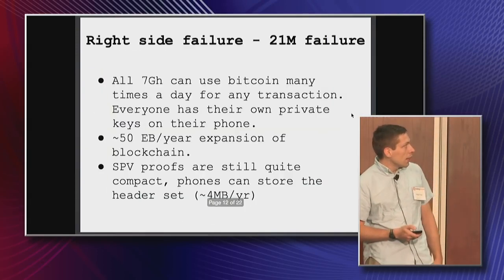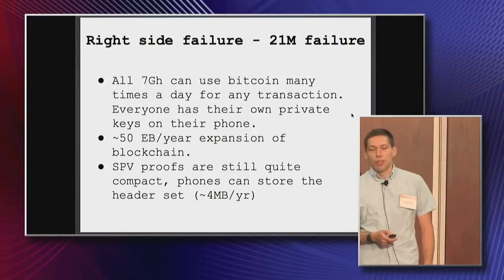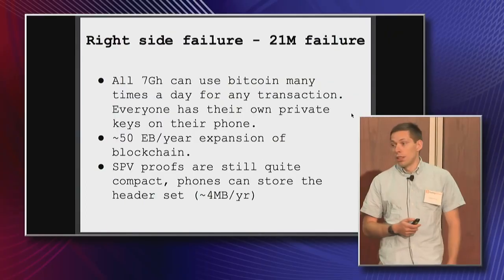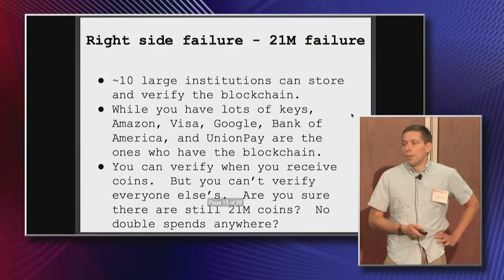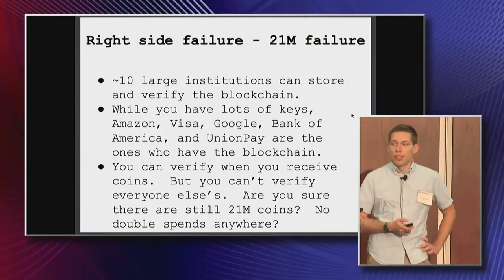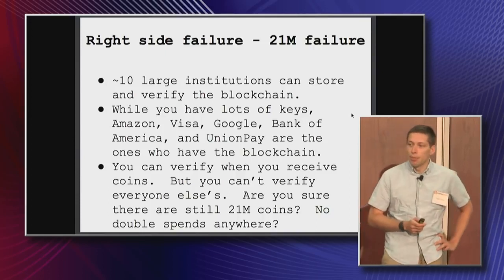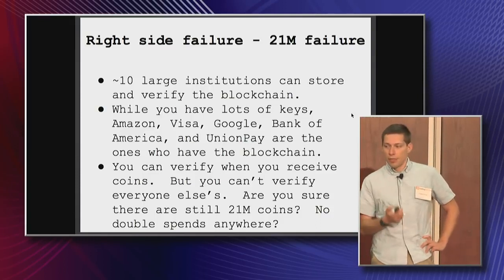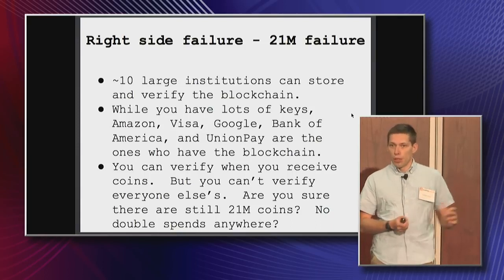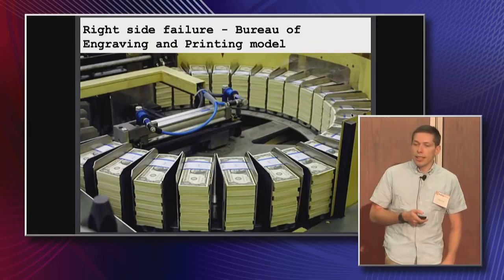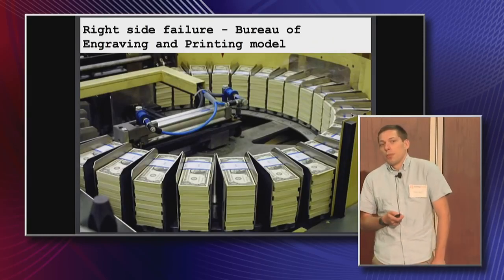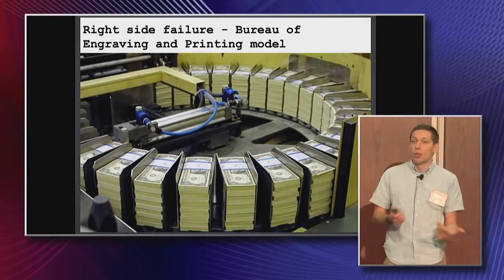Now look at the blue side — this is a 21 million failure. In this case you have 50 exabytes a year block size increase. All seven billion humans can use Bitcoin as many times a day as they want, with a gazillion private keys on their phone. SPV still works and phones can store the header set for SPV validations, about four megs a year. However, there are maybe 10 large institutions — Amazon, Visa, Google, Bank of America, UnionPay — that can store and verify the blockchain. You can verify when you receive coins but can't verify everyone else's, so there's really no way to be sure there are 21 million coins. The failure mode is sort of like Federal Reserve notes: you don't really know how many dollars there are.